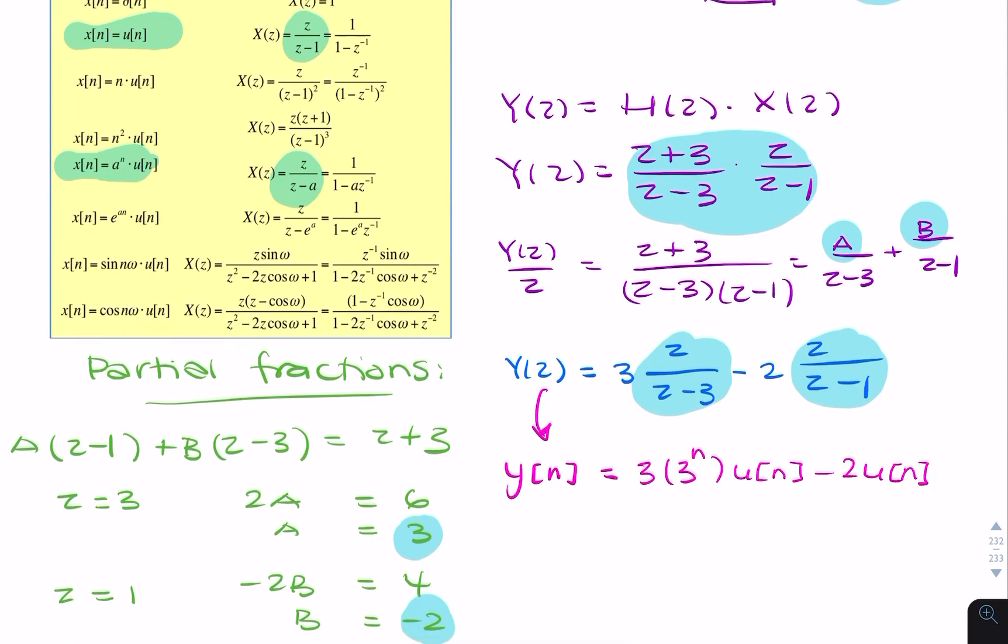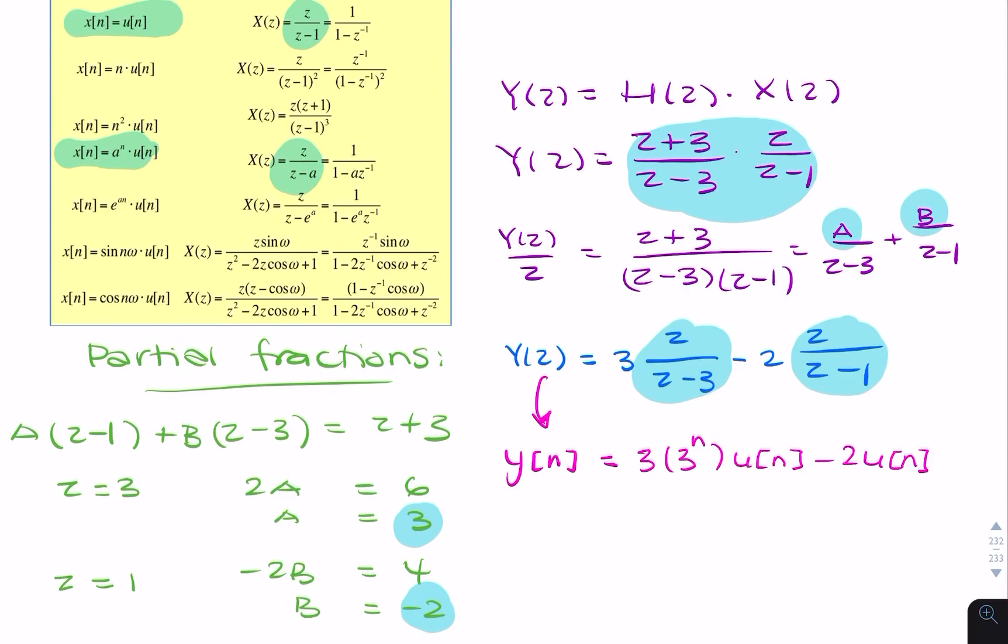It's simply 3 times 3 to the power n times u of n minus 2 times u of n. We could leave that as our final answer, or simplify: since we have 3 and 3, we can say it's 3 to the power n plus 1 minus 2 times u of n. That is our final answer.